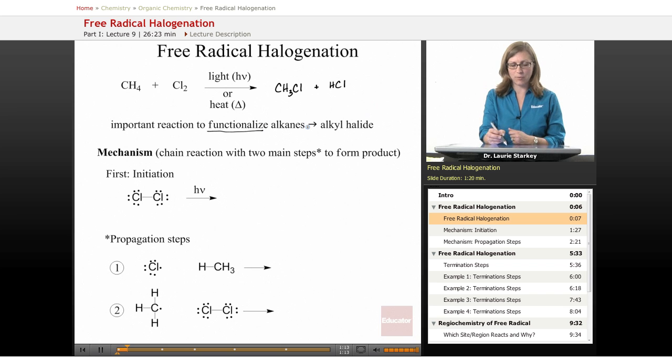And alkanes are readily available through the distillation of our crude oil from a refinery. So we have a lot of alkanes as natural raw materials. And this would be a great reaction as a way to convert them to alkyl halides.